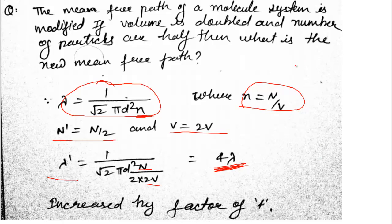This was a very easy question — the paper level appears moderate. In upcoming videos, I will also do a paper analysis: what the expected cutoff will be, what kind of paper it was, at what rank or marks you can get old IITs, new IITs, or NITs.